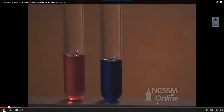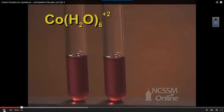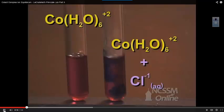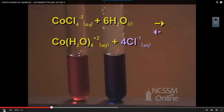We'll start with two test tubes with the cobalt water complex ion. We add 12 molar hydrochloric acid to one of the tubes. We notice that the solution turns blue, indicating that the equilibrium has shifted in the reverse direction — meaning it is shifting from the products to the reactants, so we say the equilibrium shifts to the left. The hydrochloric acid provides a source of chloride ion. As we increase the concentration of the product, the equilibrium shifts in the reverse direction to use up the added chloride ion.